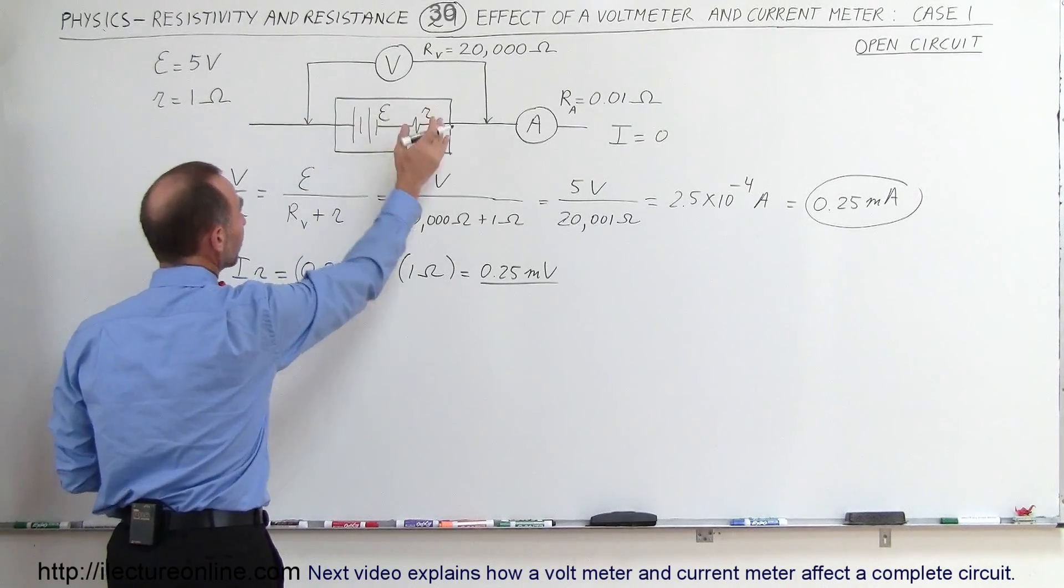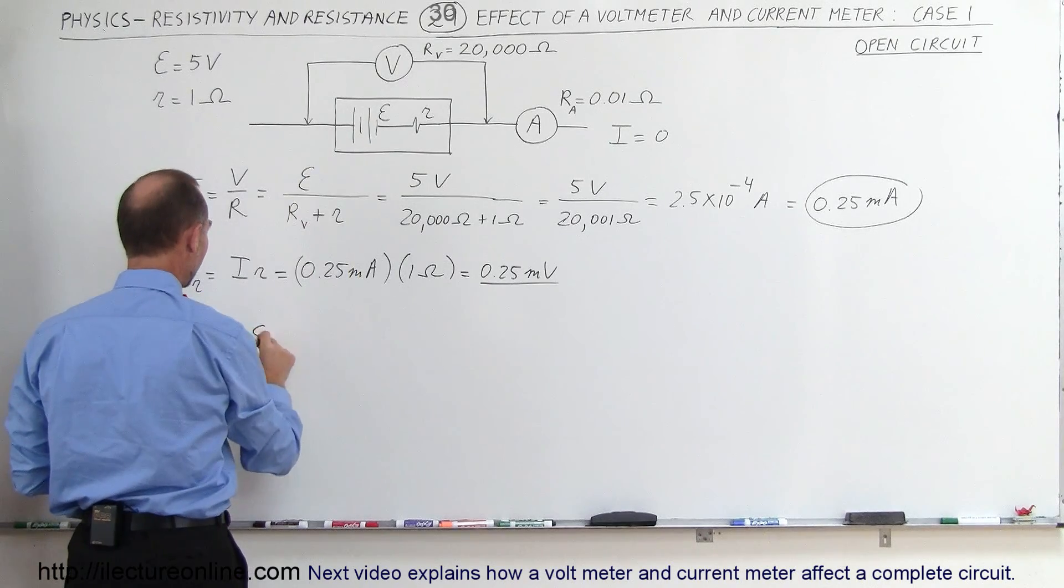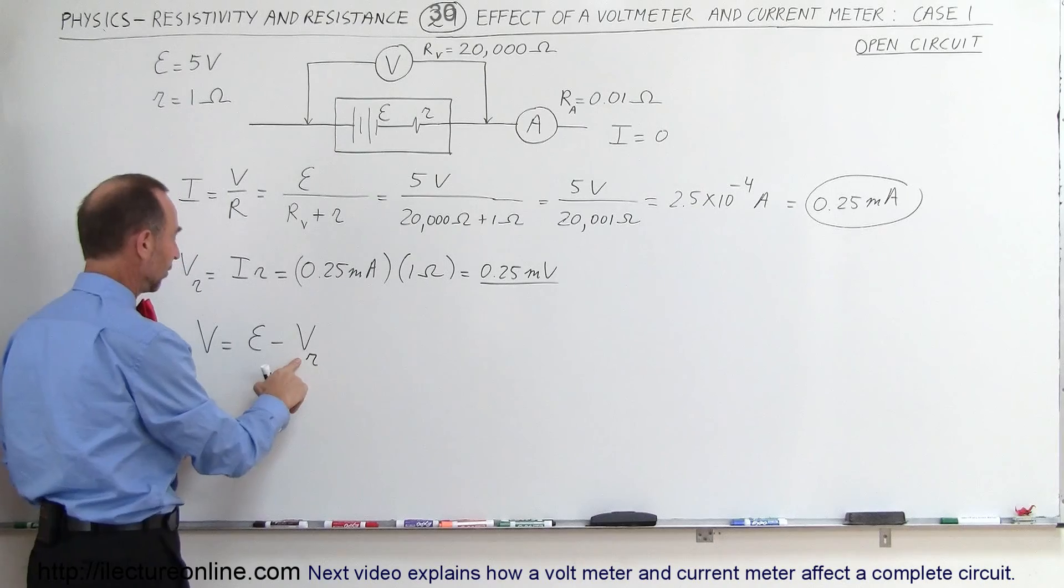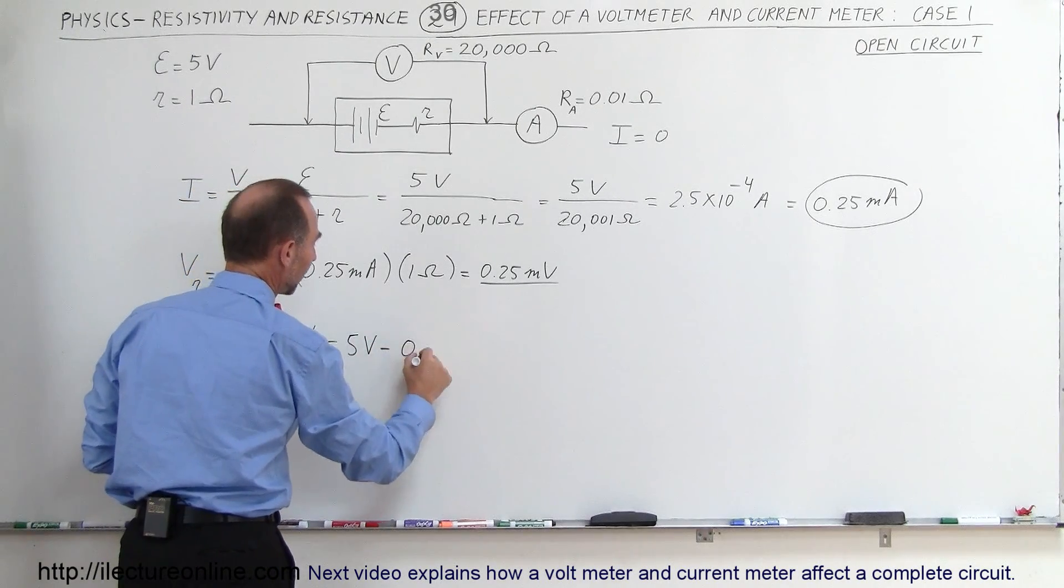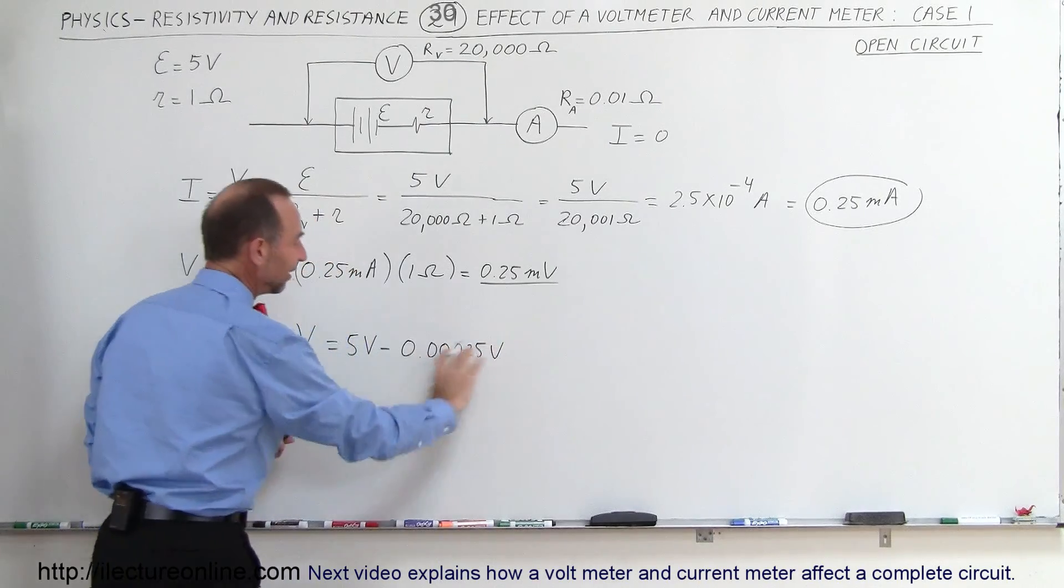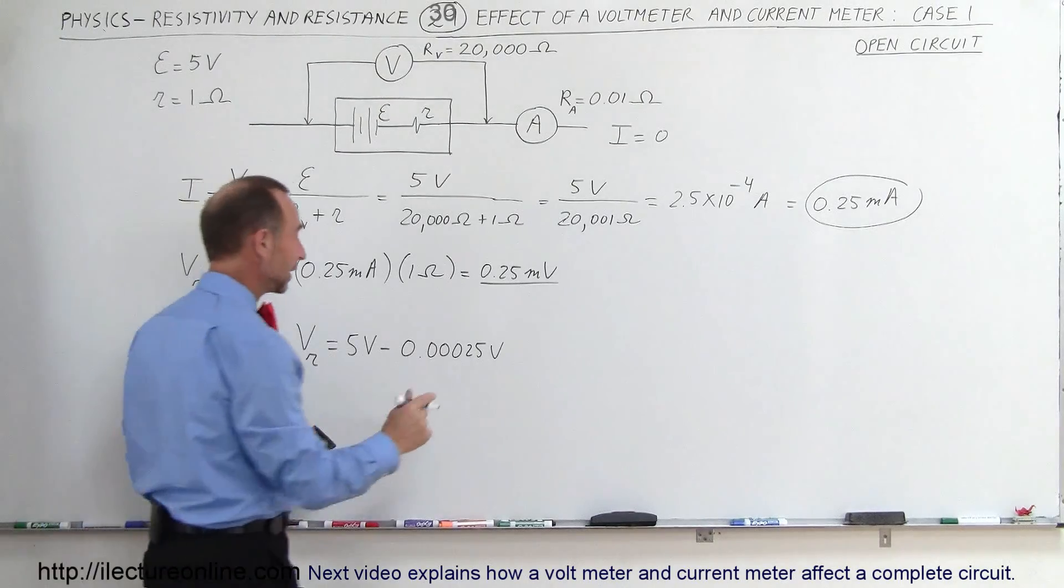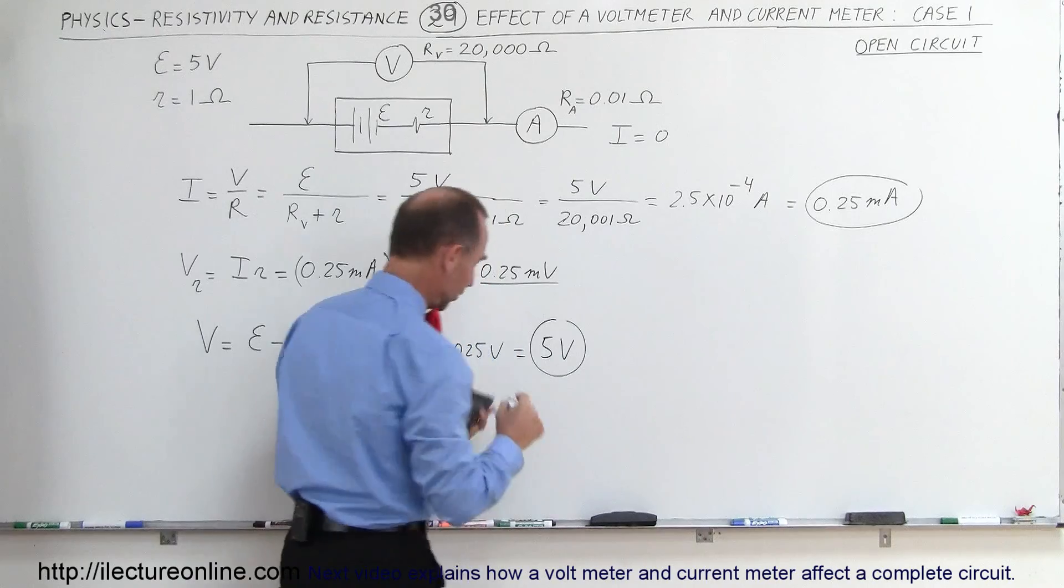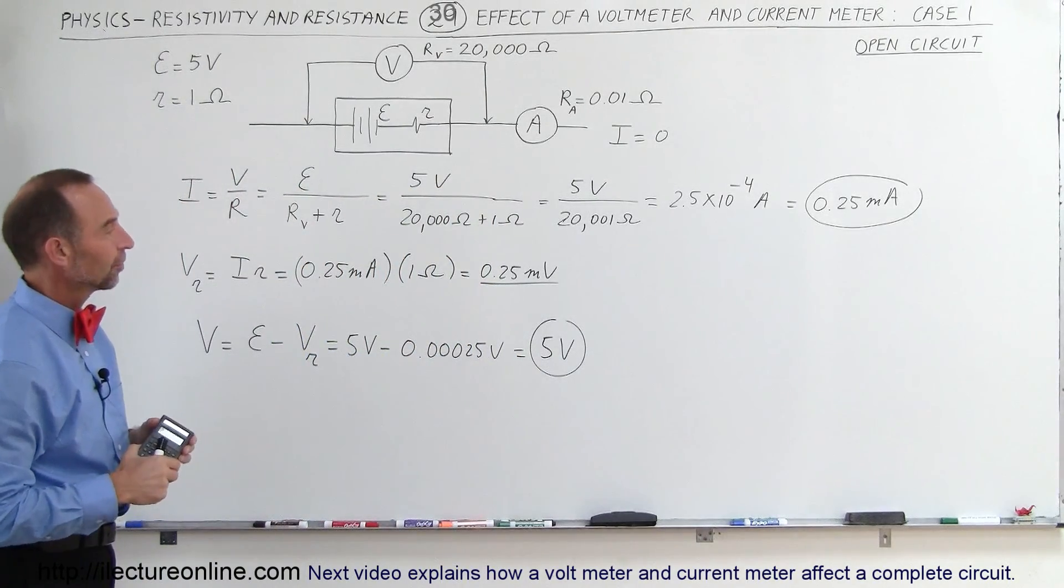So what we can say then is that the voltmeter reading is going to be equal to the EMF minus the voltage drop across internal resistance. And so this is going to be 5 volts minus 0.00025 volts. This is so small, this is so insignificant, most voltmeters will not even pick that difference up. This is still going to show you 5 volts across the battery.